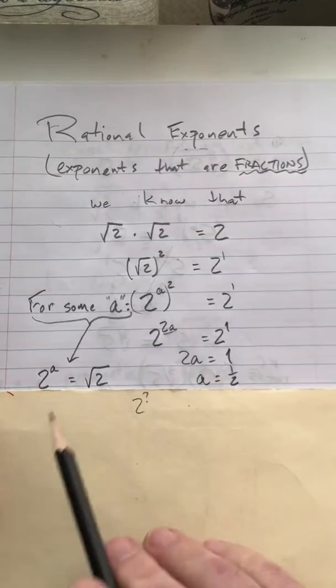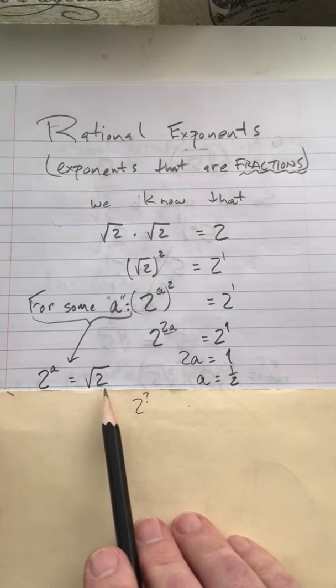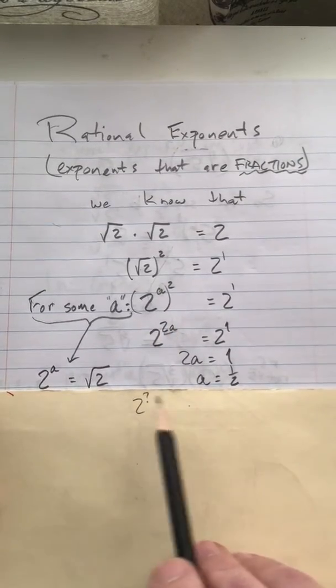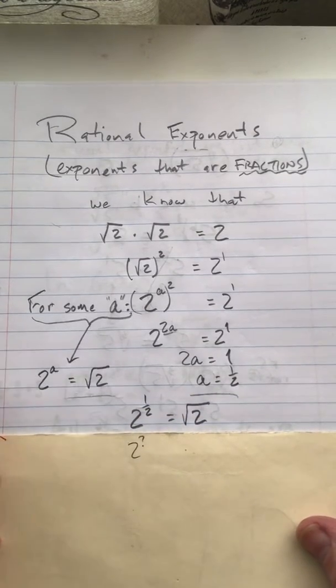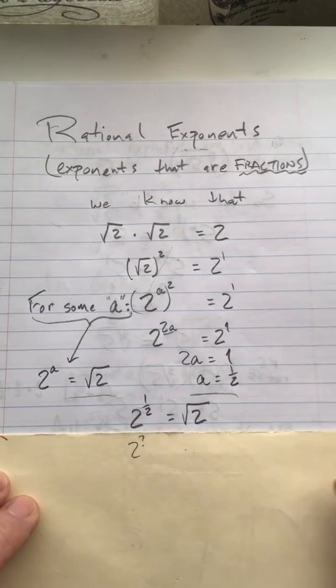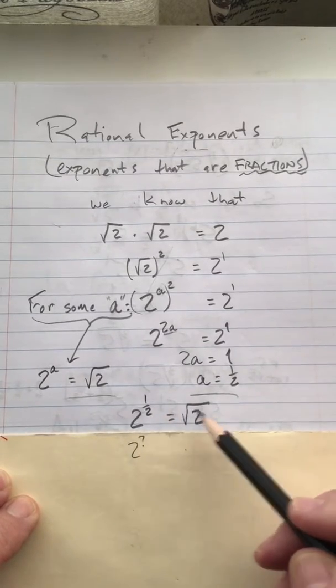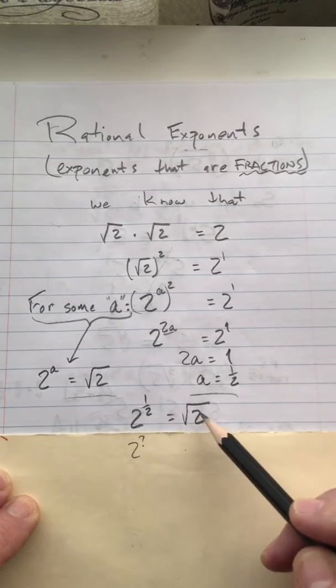So, kind of what we're saying here, just to remind you that for some a, 2 to the a is equal to the square root of 2. That's what we were trying to do here, and we just figured out that a equals 1 half, so that must mean that 2 to the 1 half is the same thing as the square root of 2. So, here's a rational exponent that is equal to the square root of 2.